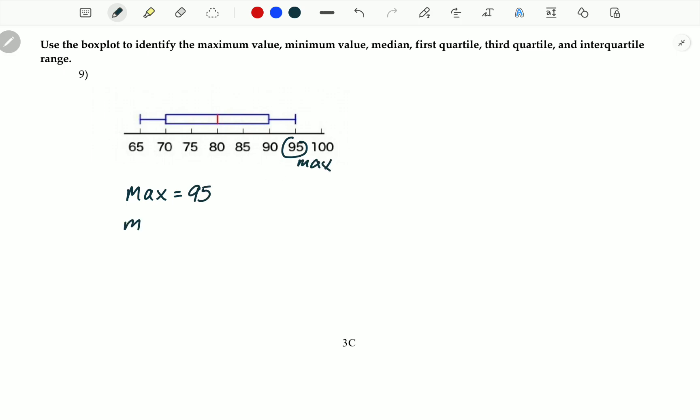The minimum value is 65. The median is the middle value of the boxplot. When I say middle value, I mean it is going to be this red mark right here, which is 80.